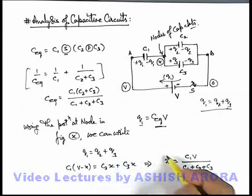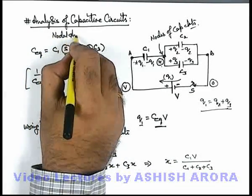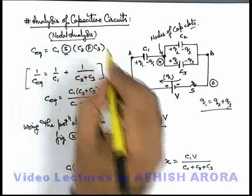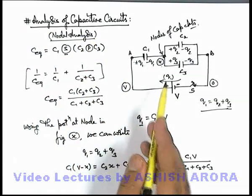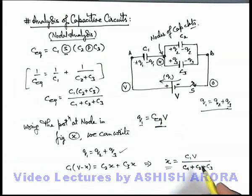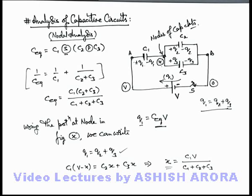This analysis of capacitive circuits we call nodal analysis. Using nodal analysis — by distributing potential at various nodes of the circuit and writing equations of charges — we can find out the potentials at nodes, which in turn give us all the parameters of the circuit. This is a useful method for handling various kinds of numerical problems, as we will see in various solved examples.